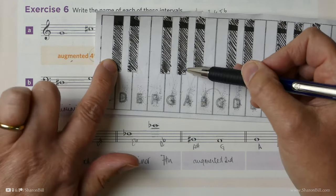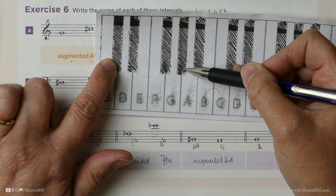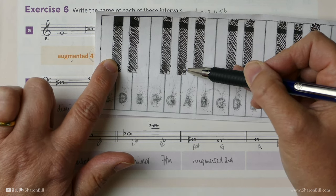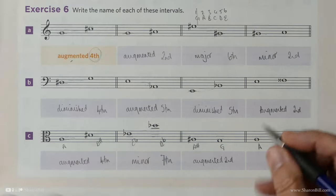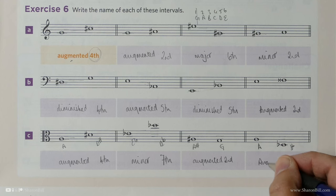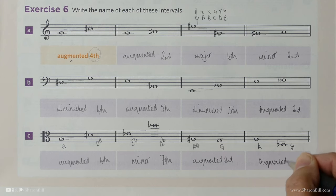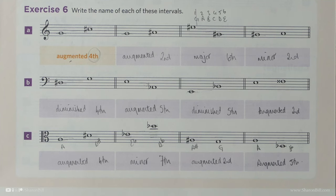D flat to A flat is perfect, isn't it? That's a perfect 5th. However, it's not A flat. It's A natural. It's been made bigger, hasn't it? So that's an augmented 5th. I do realize that's tricky, but practice makes perfect.